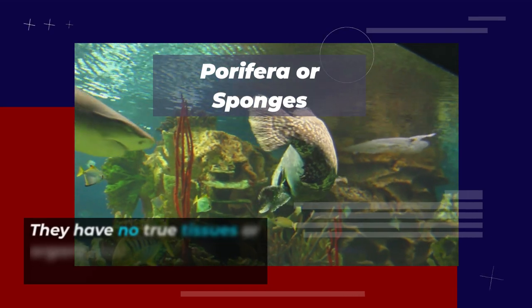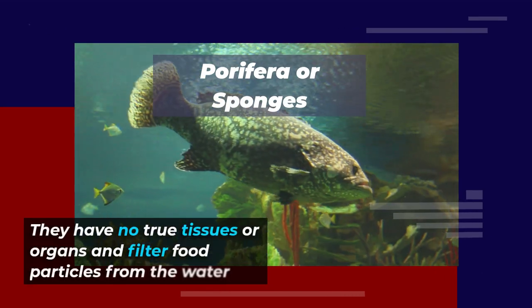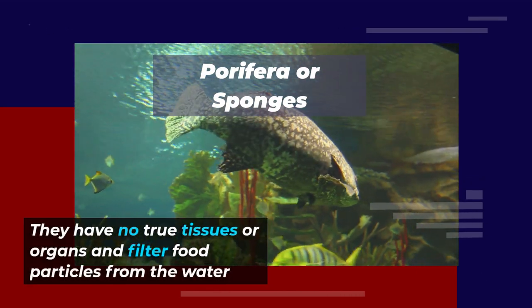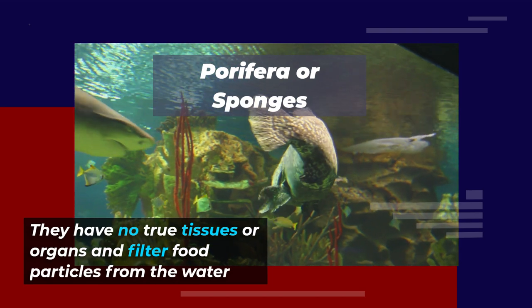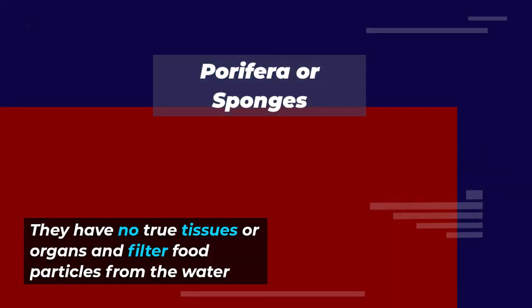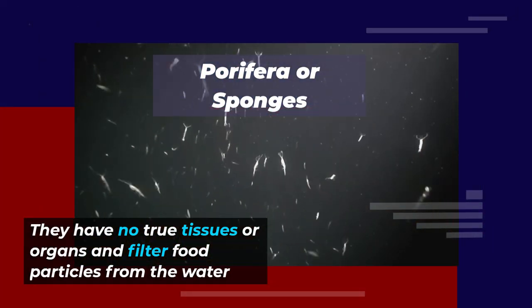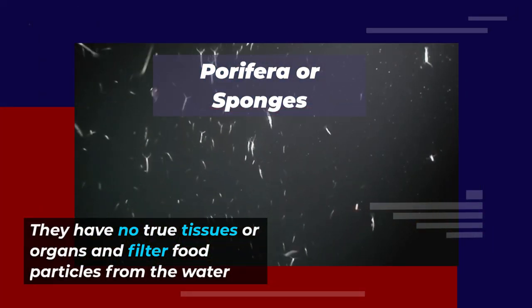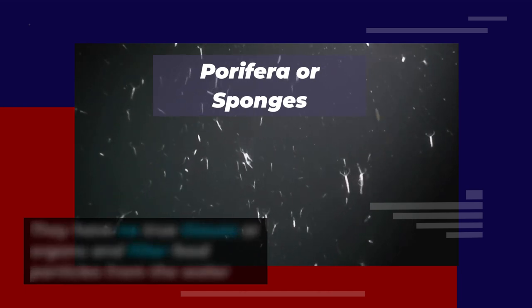The first phylum we'll be looking at is Porifera, or sponges. Sponges are the simplest and most primitive animals — they have no true tissues or organs and filter food particles from the water. They have a porous body that is supported by a skeleton made of spicules or collagen.